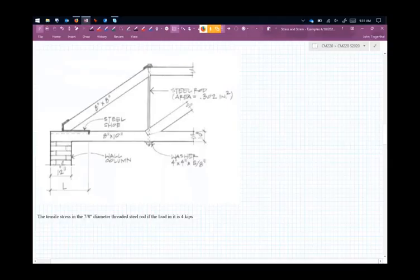So, try to answer this question here. The tensile stress in the seven-eighths inch diameter threaded rod. What is the tensile stress if it's loaded at 4 kips?